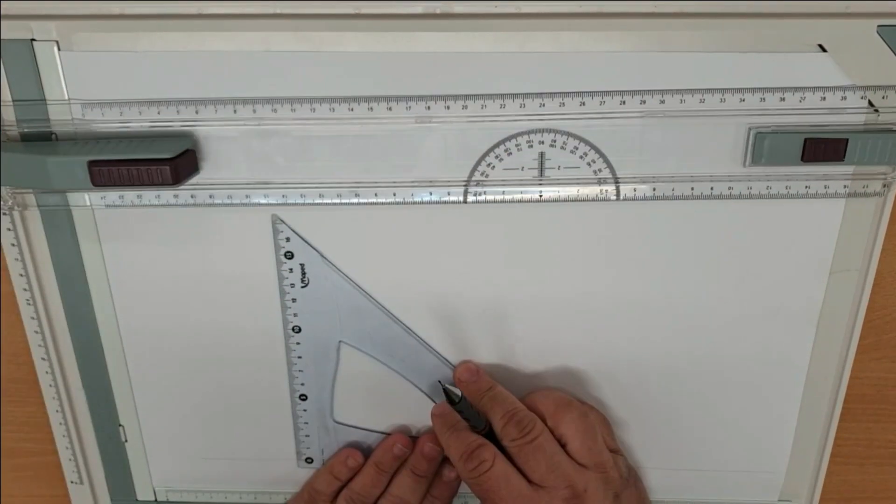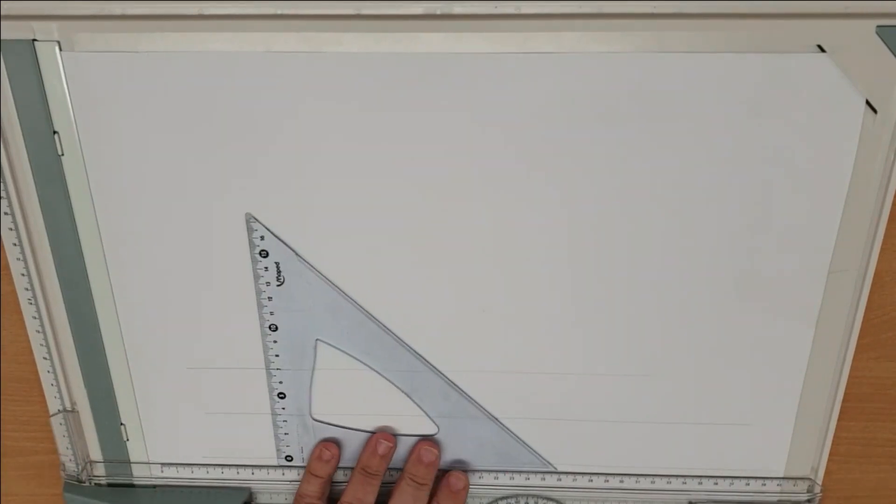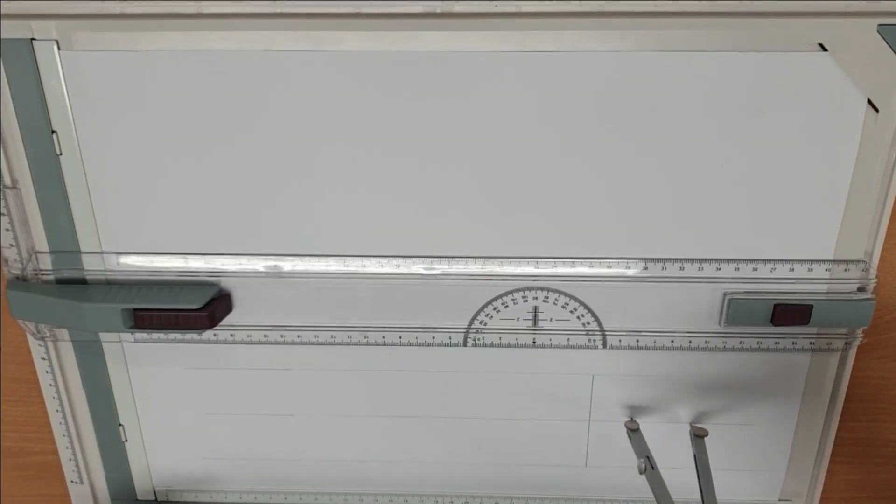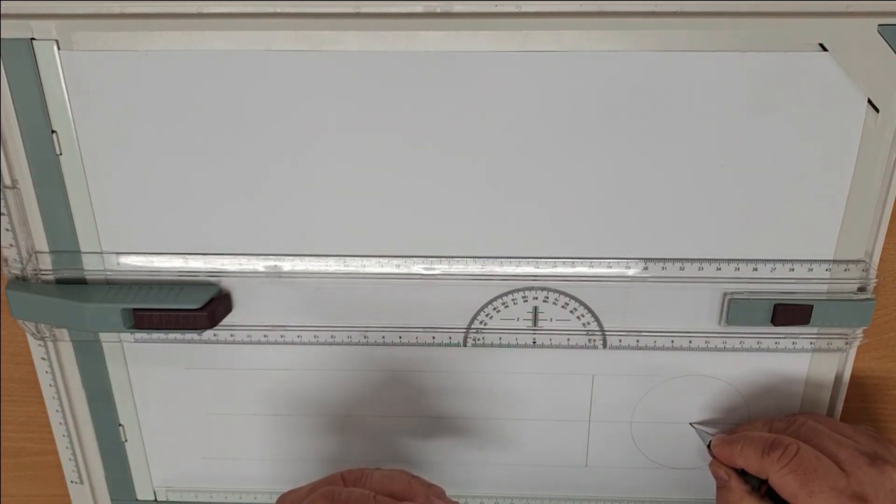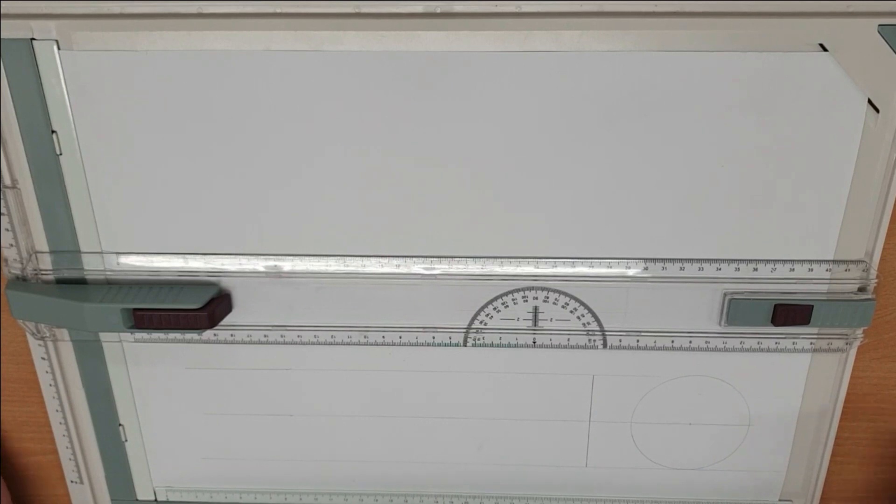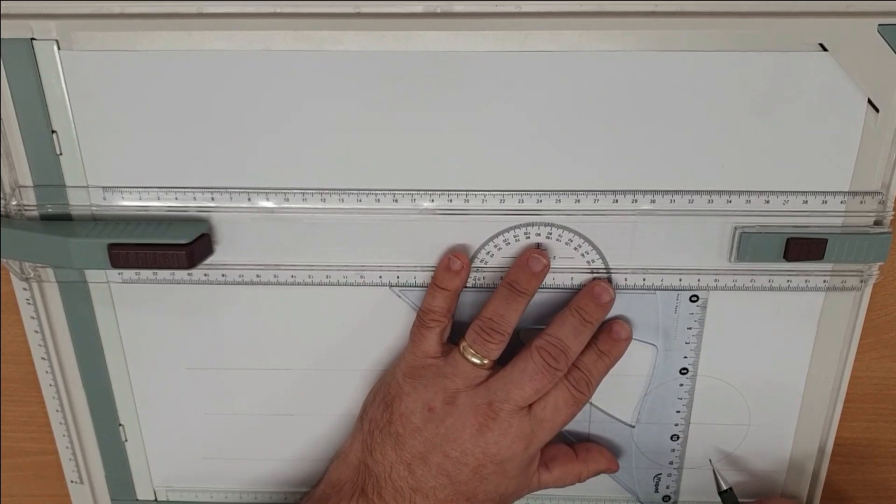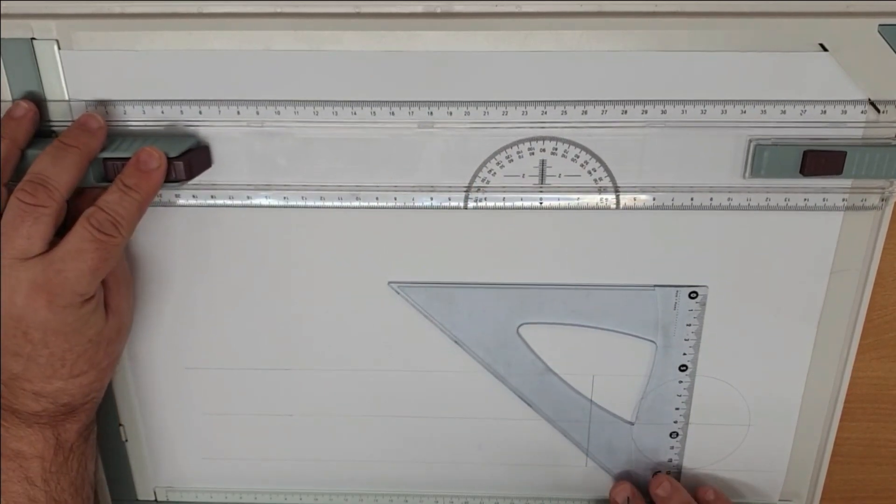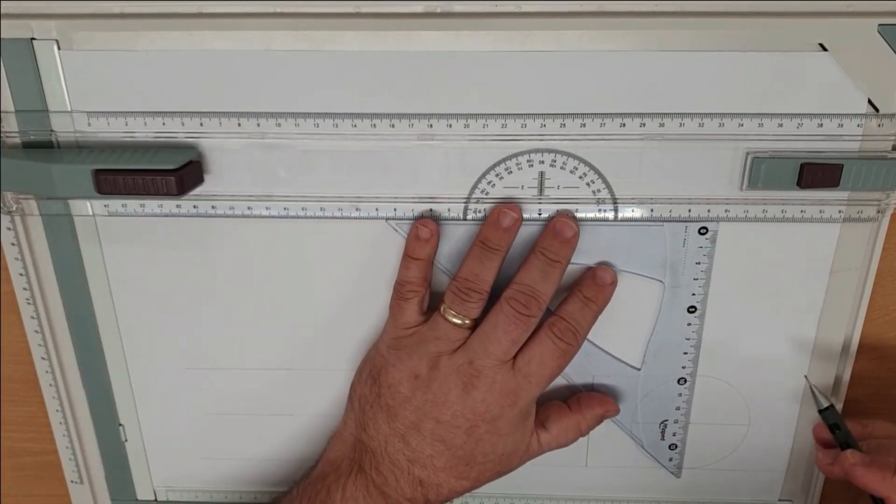So welcome back. In this video we're going to do a 45-degree pipe branch. We're going to do the side view and the end view. So we're going to start with our 90mm diameter tube. On top of the tube we've got our 45-degree branch which is going to be 50mm in diameter.